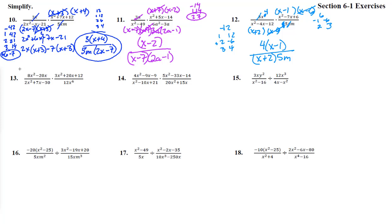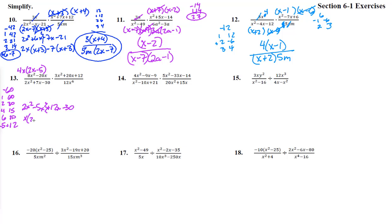Number 13. On top we take out a 4x, leaving (2x − 5). On the bottom, AC method: 2 times negative 30 is negative 60. Pairs: 1 and 60, 2 and 30, 4 and 15, 5 and 12, 6 and 10. The pair positive 12 and negative 5 works. So we write 2x² − 5x + 12x − 30, factor by grouping: x(2x − 5) + 6(2x − 5), giving (x + 6)(2x − 5).